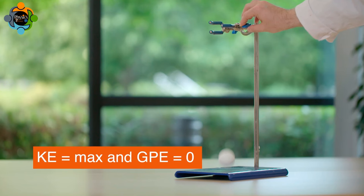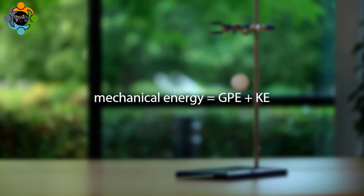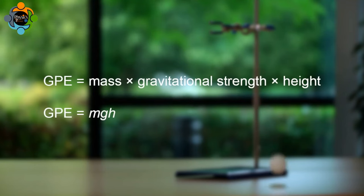The mechanical energy is the sum of gravitational potential energy and kinetic energy. The gravitational potential energy depends on mass, height, and the gravitational strength of the planet that the object is on.